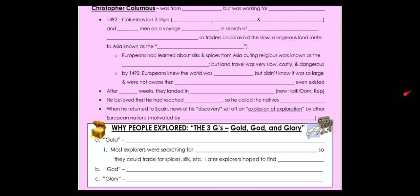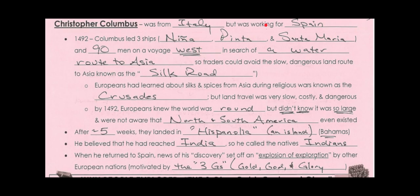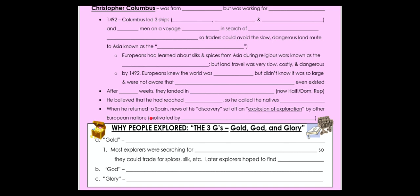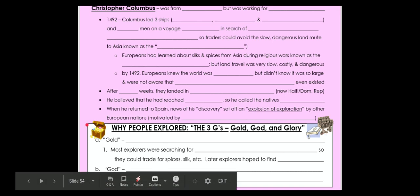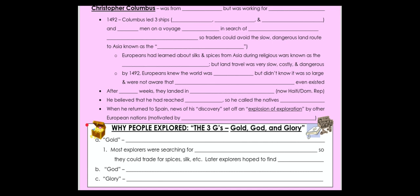These top notes should be filled in already, but if not, you can pause at any time and fill them in. Now we're going to look at why people explored — the three G's: gold, God, and glory. This is their motivation for exploring, and later when we talk about colonization and setting up colonies, the motivation again is going to be the three G's. A lot of times the motivation for anything in social studies can be boiled down to these three G's, which are big categories so we can make almost anything fit.